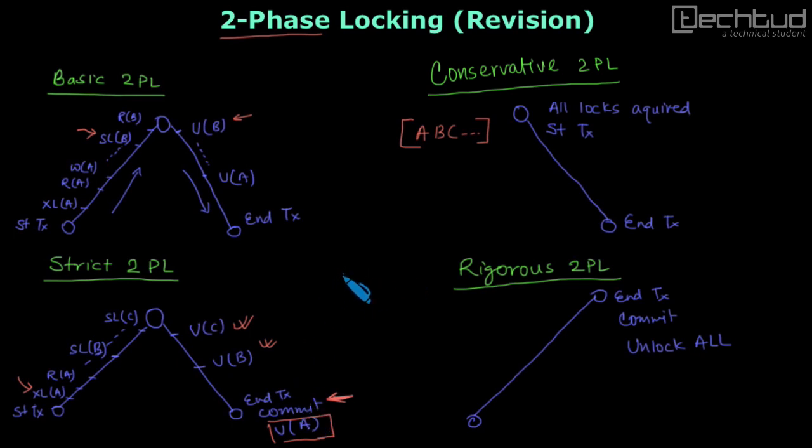The point is that if on A we have acquired exclusive lock, it means that I am going to perform a write operation. I am going to perform a write operation on A, that's why I have acquired exclusive lock. It means that all those data which are having exclusive lock has been written by some transaction.